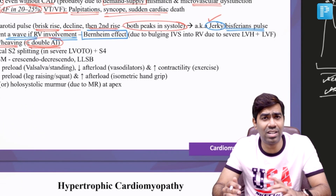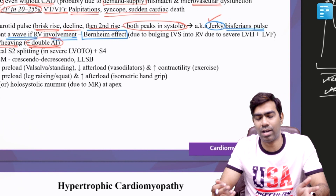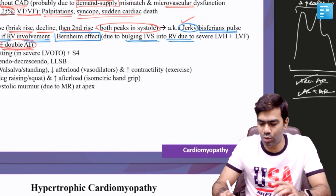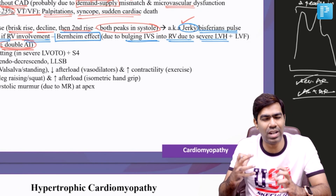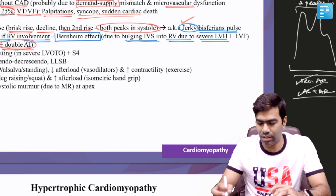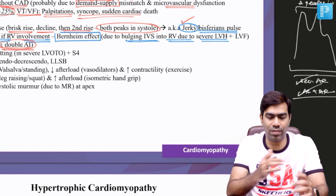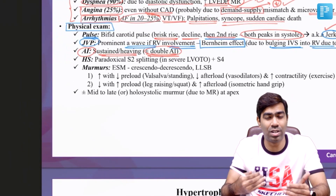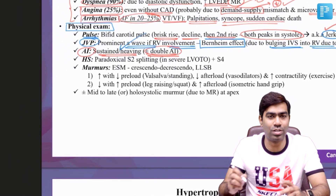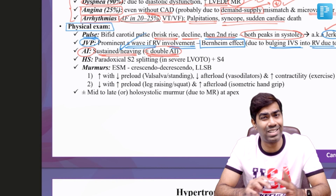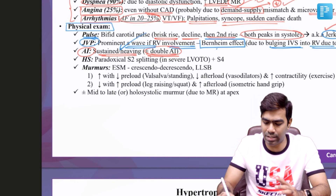The Bernheim effect is due to right ventricular involvement. The right ventricle can be affected in left ventricular hypertrophy because of bulging of the intraventricular septum into the right ventricle due to severe LVH and very high pressures generated within the left ventricle. This results in reduced right ventricular compliance, producing a prominent A-wave. A prominent A-wave due to severe LVH is called the Bernheim effect — it happens rarely and is an exam question.